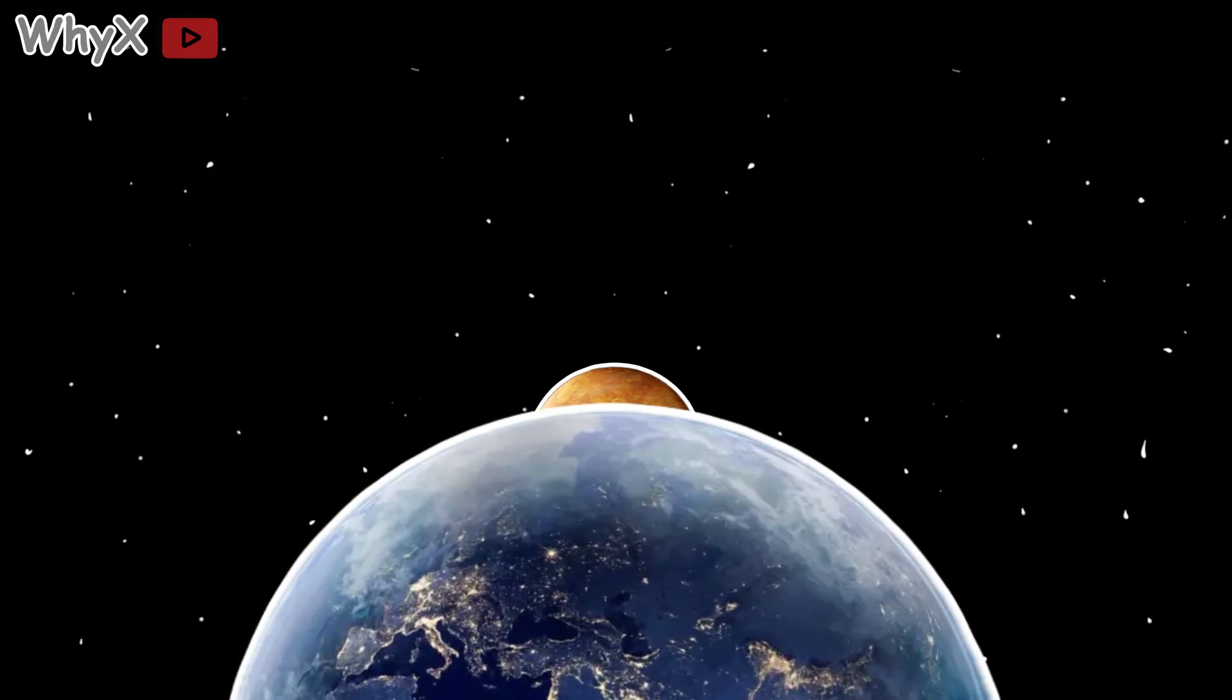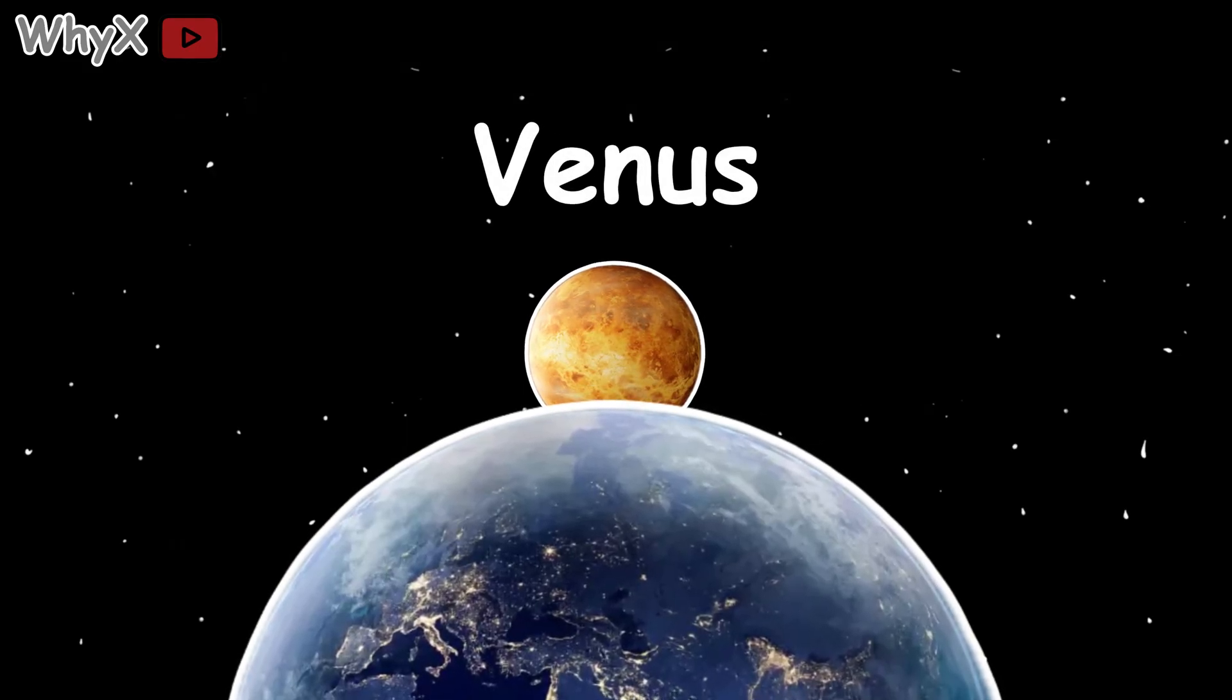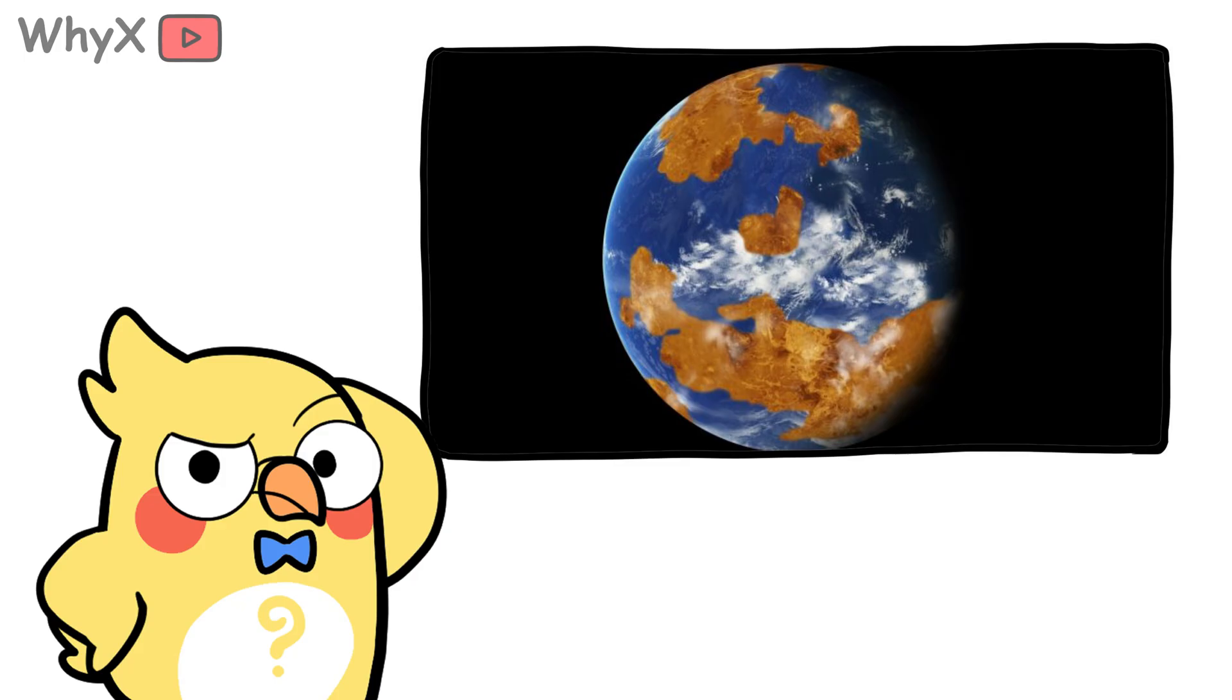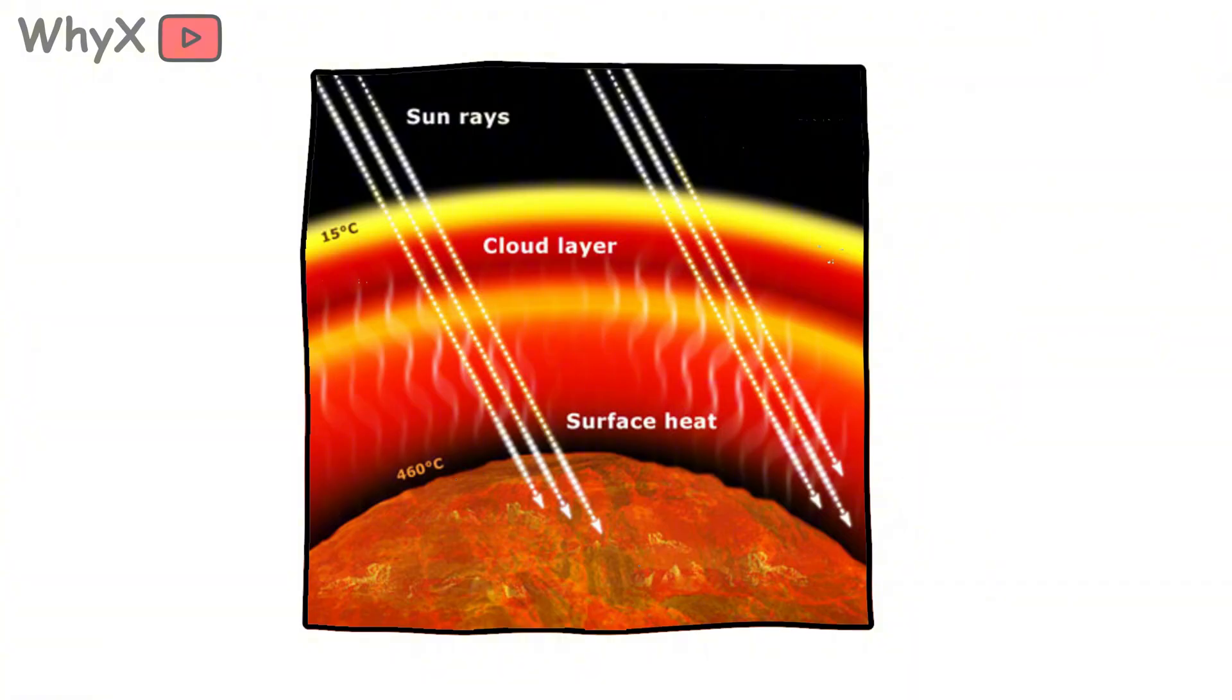Now pivot the camera to Earth's closest frenemy, Venus. It's our twin in size and bulk, wrapped in a warm haze, sitting just a little closer to the sun than we do. For a long time, science fiction gave Venus oceans and jungles, as if geography were destiny. Reality is meaner. Venus wears a pressure cooker atmosphere and runs a planetary greenhouse strong enough to melt lead.